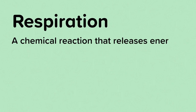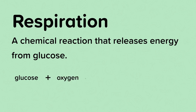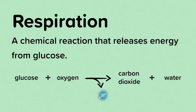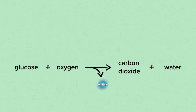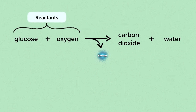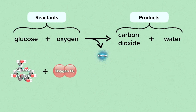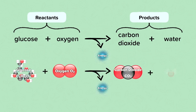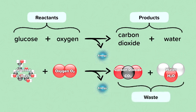Respiration is a chemical reaction that releases energy from glucose. Glucose plus oxygen makes carbon dioxide and water, and energy is released. The arrow for respiration looks like this, because energy cannot be created or destroyed, it cannot be a product or a reactant. Glucose and oxygen are the reactants; carbon dioxide and water are the products and waste products.